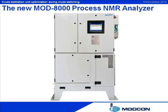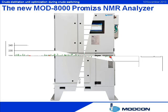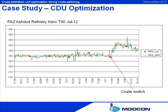The new MOD 8000 process NMR analyzer was successfully installed in two oil refineries, showing high accuracy and reliability. In both applications, this analyzer was used to quantify physical properties of crude distillation unit streams, including density, API, IBP, FBP, T10%, T90%, RVP, flashpoint, pourpoint, cloudpoint, freezepoint, and others. When crude switching occurred, MOD 8000 minimized the impact on CDU operation by an immediate adjustment to shift the exact cut point, so that the maximum production capacity of each product towards the most valuable distillates was achieved.